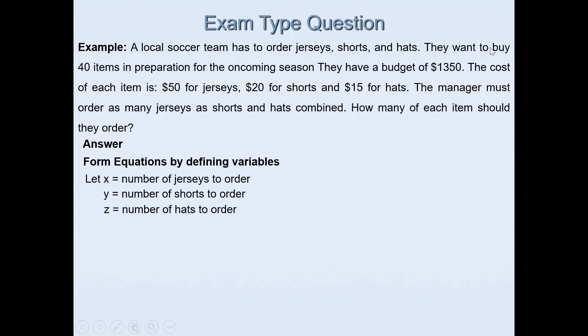In the second sentence we are told that they need to order 40 items. What that means is if I add number of jerseys, shorts and hats then the total should be 40. So x + y + z = 40. That's my first equation.